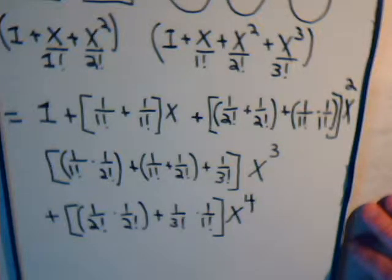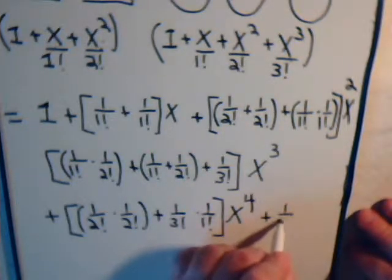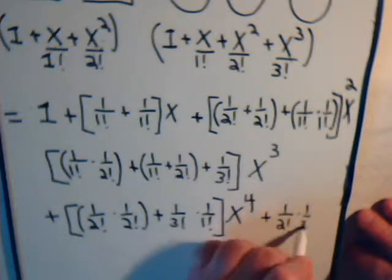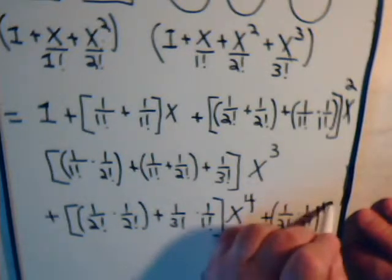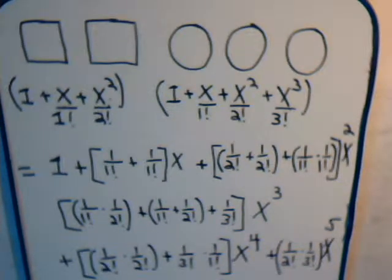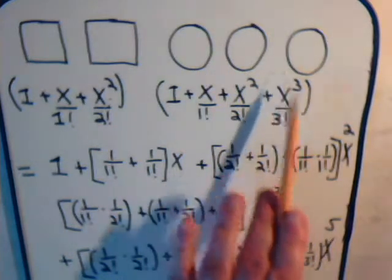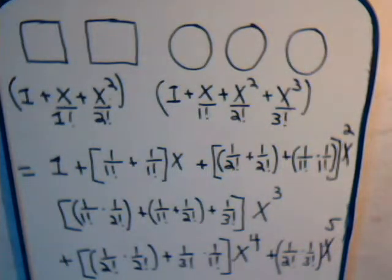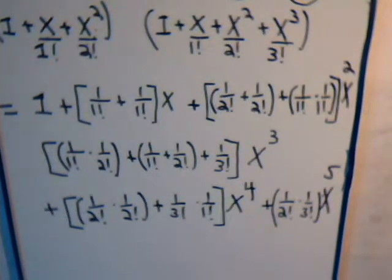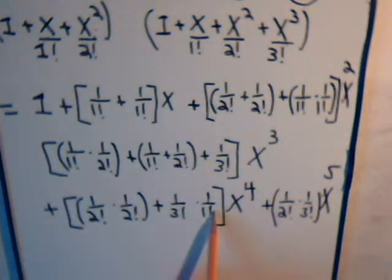Finally, for x to the 5th, that comes from 1 over 2 factorial times 1 over 3 factorial, times x to the 5th. So what we've done is taken the exponential generating function for the squares, the exponential generating function for the circles, and multiplied them together to get this full expression, where each term corresponds to x, x squared, x cubed, x to the 4th, and x to the 5th.